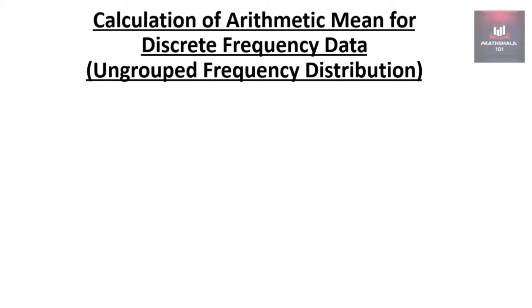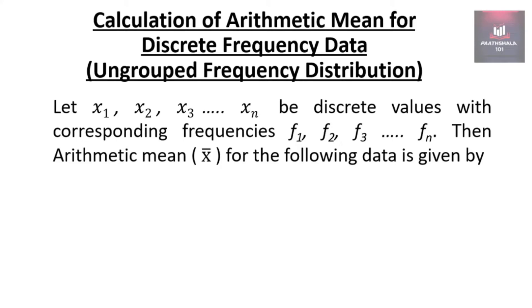Now let's understand calculation of arithmetic mean for discrete frequency data, which you can also say as ungrouped frequency distribution. Let x1, x2, x3 dot dot dot till xn be the discrete values given with their corresponding frequencies as f1, f2, f3 dot dot dot till fn.